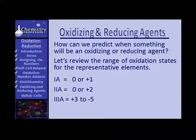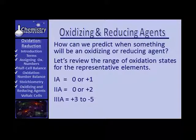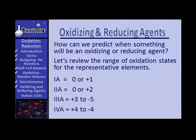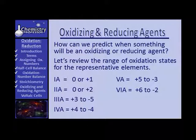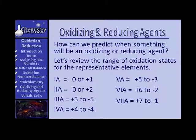The 3As run from plus 3 to negative 5 — plus 3, plus 2, plus 1, 0, negative 1, negative 2, negative 3, negative 4, negative 5. The 4As — the carbon family — run anything from plus 4 to negative 4. The 5As from plus 5 to negative 3. The 6As from plus 6 through 0 to negative 2. The 7As from plus 7 through 0 to negative 1.